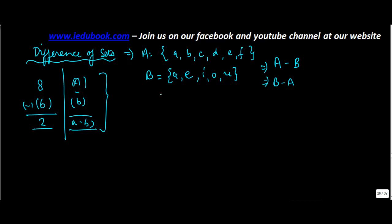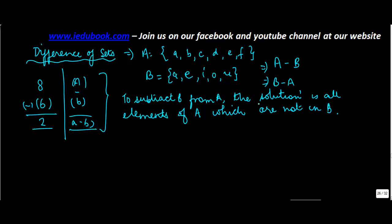Now how do you subtract one set from the other? To subtract B from A, the solution is all elements of A which are not in B.